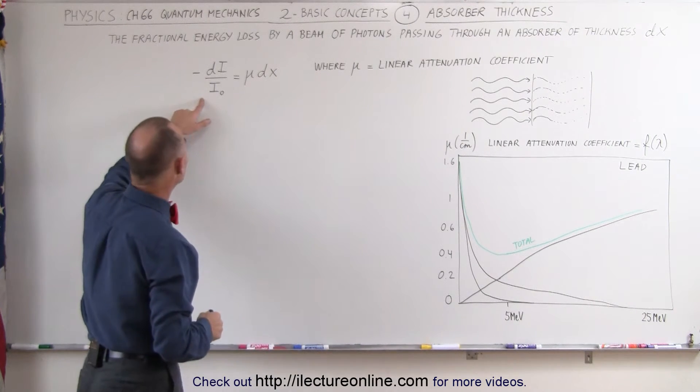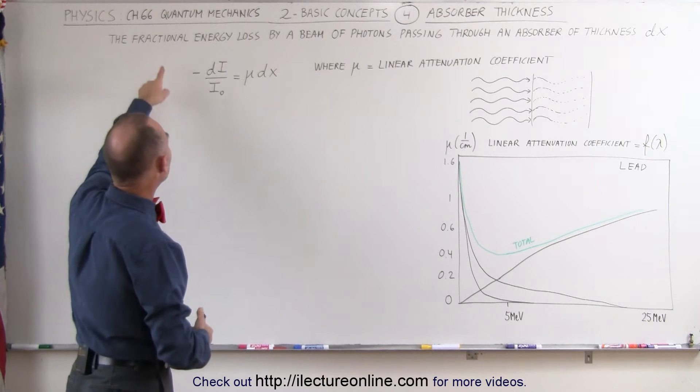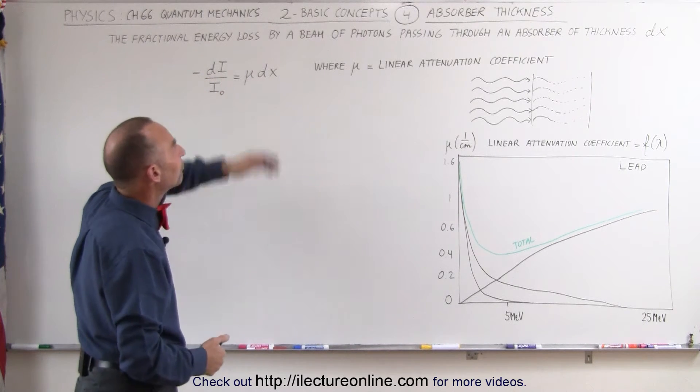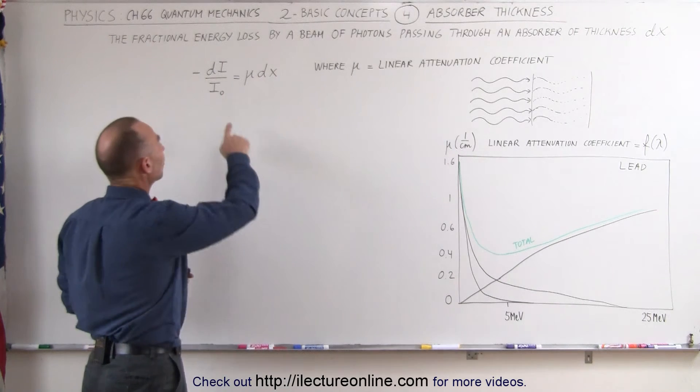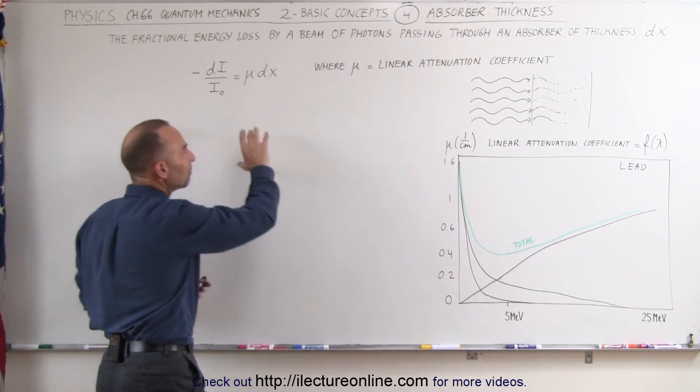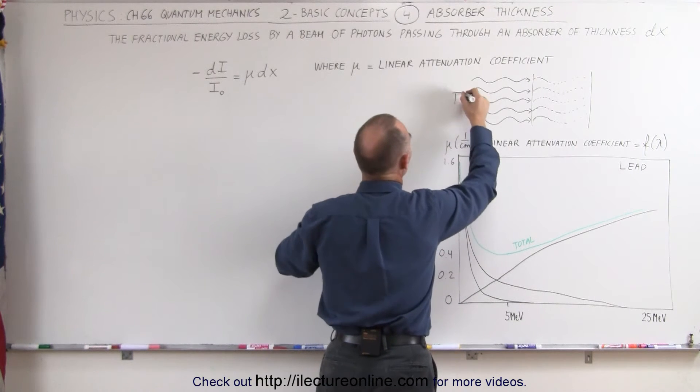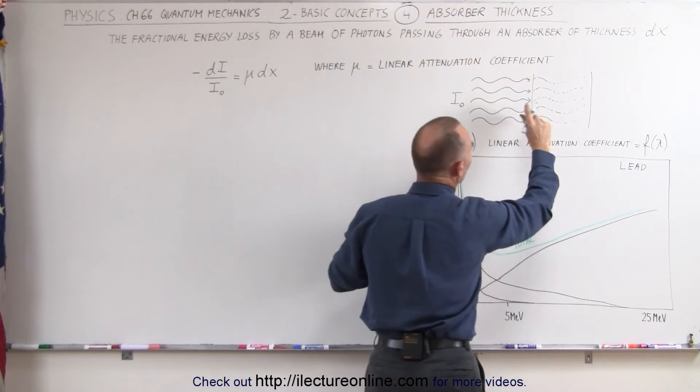Now here we have an equation where we can calculate the fractional energy loss by a beam of photons passing through an absorber of thickness dx. If this was the original intensity of the incoming beam, assume this to be I sub naught right here, notice that as it passes through a material,